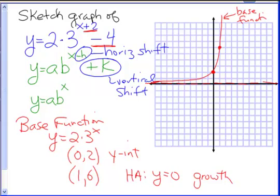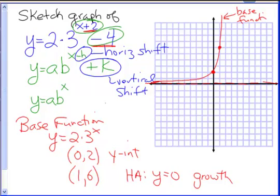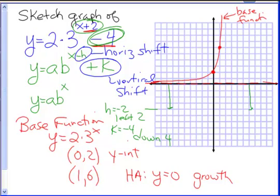Using translations, we focus on what x plus 2 and negative 4 tell us. Since our template has x minus h, we take the opposite: h equals negative 2, which means we shift left 2. For k, we have minus 4, so k equals negative 4, meaning we shift down 4. The down 4 applies to our horizontal asymptote, which moves down 4 all the way across, giving us a new horizontal asymptote.